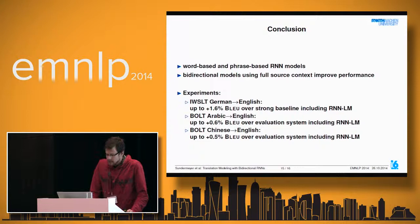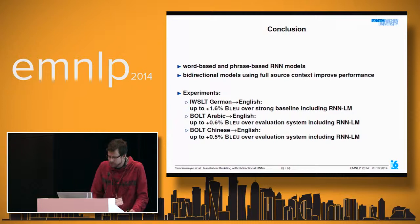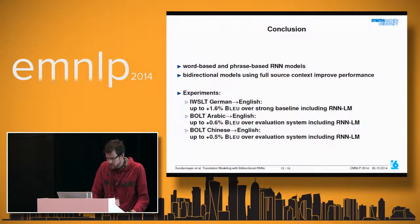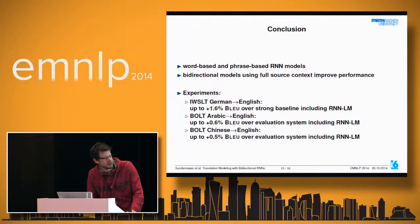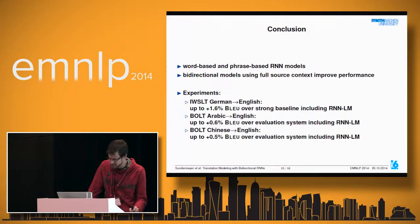In conclusion, we introduced two types of recurrent neural translation models: word-based and phrase-based. The phrase-based models are more theoretically motivated as they use the decoder's own phrase segmentation, but word-based models still perform better in our experiments. Bidirectional translation models using complete future source context further improve performance. Results show improvements on all three tasks: 1.6 BLEU on IWSLT German-English, and up to 0.6 and 0.5 BLEU on Arabic- and Chinese-English BOLT—all on top of systems already using a recurrent neural network language model.